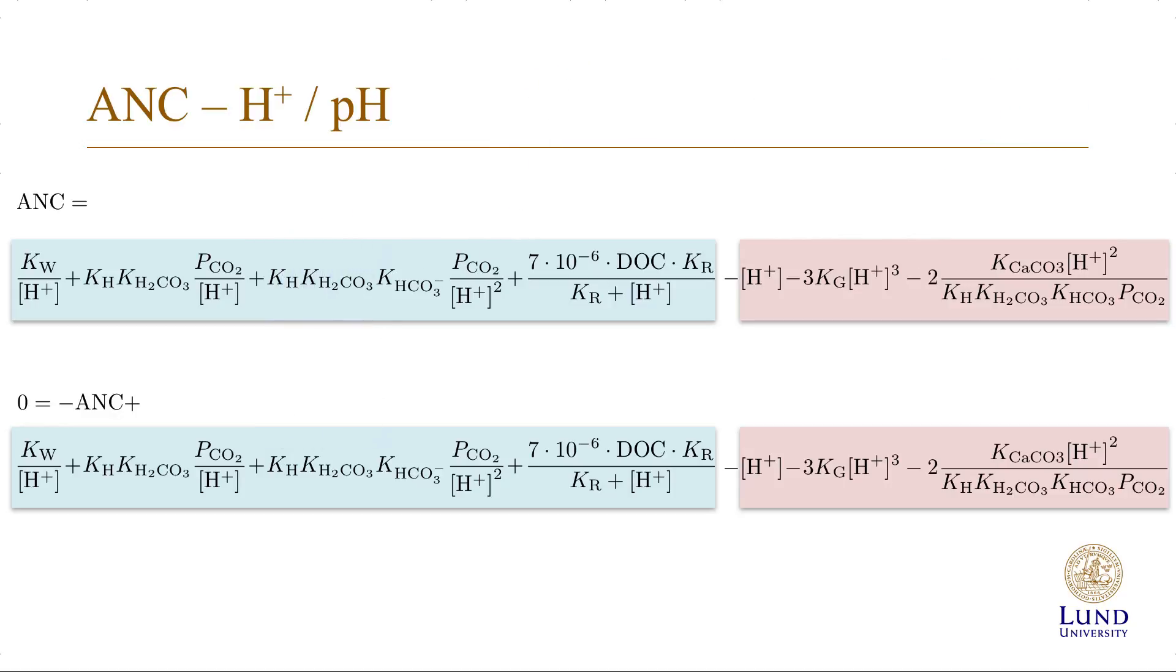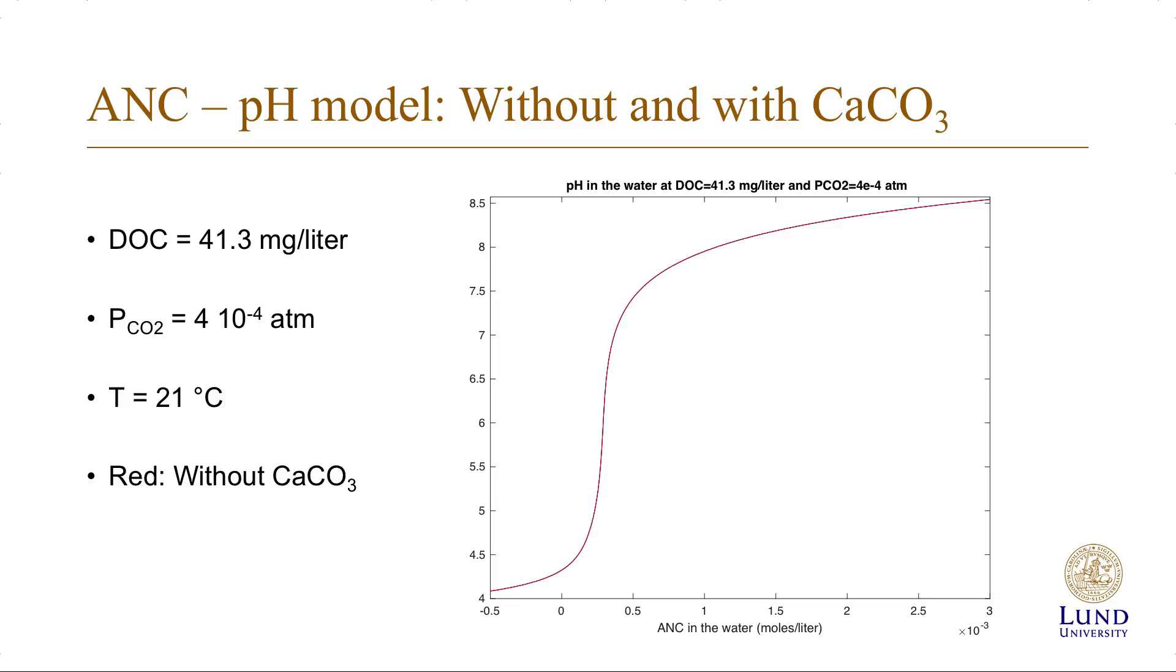So let's look at the solution to this equation. Here I have made a series of calculations of pH as a function of ANC in the water, and the calculations have been made for a certain DOC value, ambient carbon dioxide pressure, and at a certain temperature. And the red curve represents the pH as a function of ANC without any calcium carbonate present.